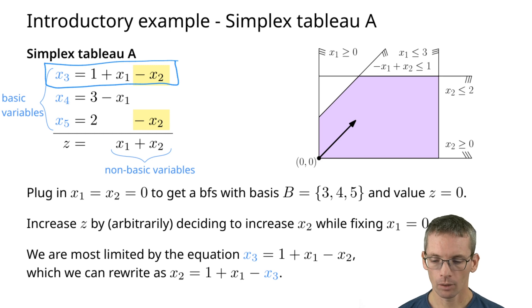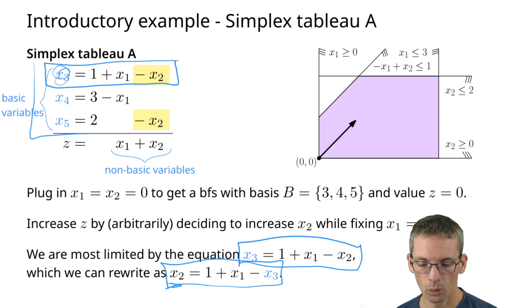Now the idea is that we take x3 out of the basis and we put x2 into the basis. For that we will want to, instead of having x3 here, we want to have x2 here, written as a function of x1 and x3. This is very easy. We just take the equation for x3, rewrite it so that we have x2 here on the side, and this will be now my first equation in my new simplex tableau.